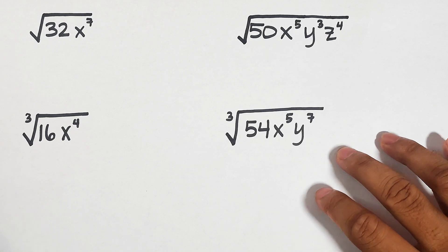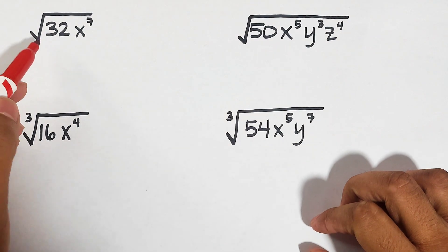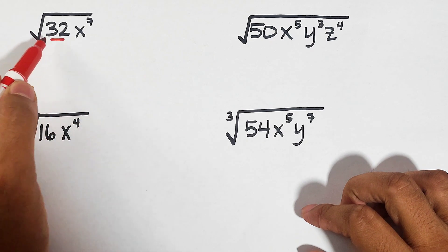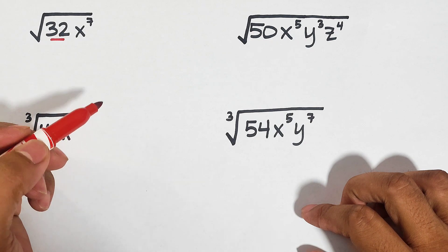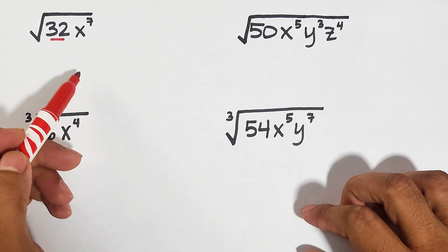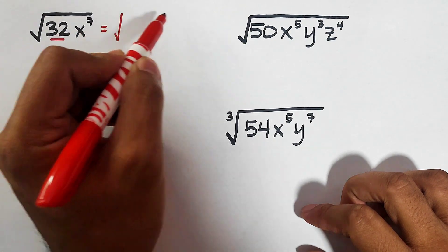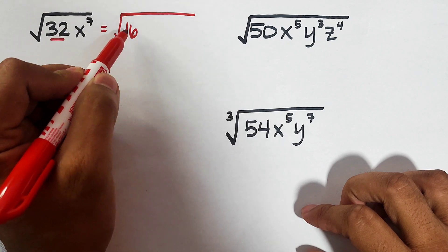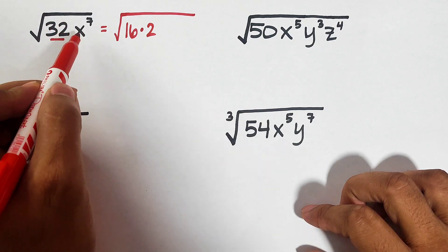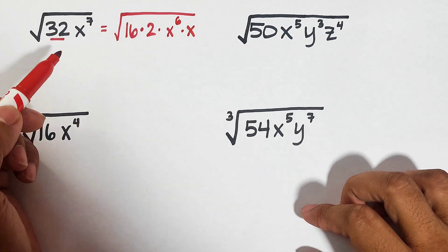Now let's move on with more examples — examples with variables and numbers. Don't worry, this is not difficult if you are familiar with perfect square numbers. For example number four, we have the square root of 32x raised to the seventh power. First we need to figure out the factors of 32, where one must be a perfect square. Since 32 is not a perfect square, we factor it: 16 times 2. For x to the seventh power, we break it down as x raised to the sixth times x.